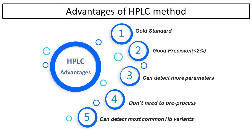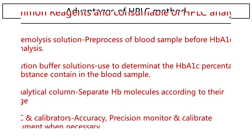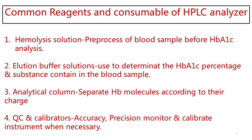Advantages of the HPLC method in HbA1c testing include: it is the gold standard method, it has good precision, it can detect more parameters, it does not require pre-processing such as centrifugation, and it can detect the most common hemoglobin variants in a blood sample.